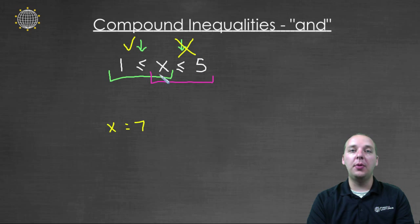So in order to satisfy both of these inequalities, they both have to be true at the same time. That's why we call this an AND compound inequality, because we would say 1 < x and x < 5. Both have to be true simultaneously.